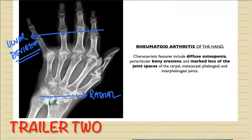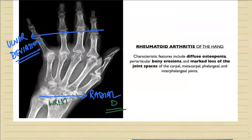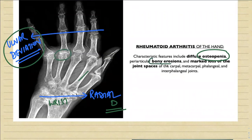As seen initially, at the level of the wrist joint there is radial deviation, whereas at the level of the fingers there is ulnar deviation. There is diffuse osteopenia — you can see blackishness very easily. Around the periarticular region, you can see bony erosions, and the joint space is markedly reduced. This loss of joint space is seen between the carpal bones, metacarpal bones, phalanges, and interphalangeal joints.